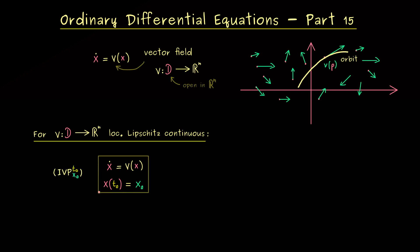As in the last video, in order to keep the notation short, we will always write IVP with T0 and X0. The last video also told us that this initial value problem has a unique maximal solution — so we have existence and uniqueness when looking at maximal solutions. This simply means that the domain for the solution alpha is given by an interval I that cannot be made larger; this is the best solution we get for the initial value problem.